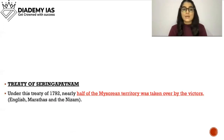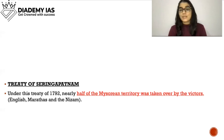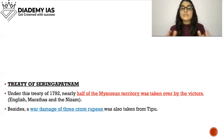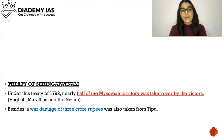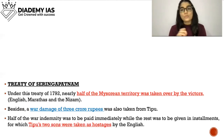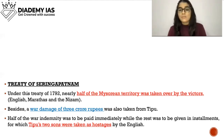Under the Treaty of Seringapatnam of 1792, nearly half of the Mysorean territory was taken over by the victors — the English, the Marathas, and the Nizam. Besides, a war indemnity of 3 crore rupees was also taken from Tipu. Half of the war indemnity was to be paid immediately, while the rest was to be given in installments.